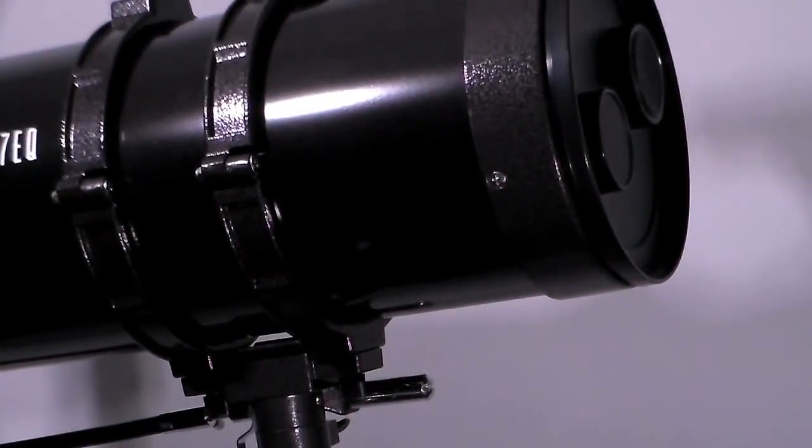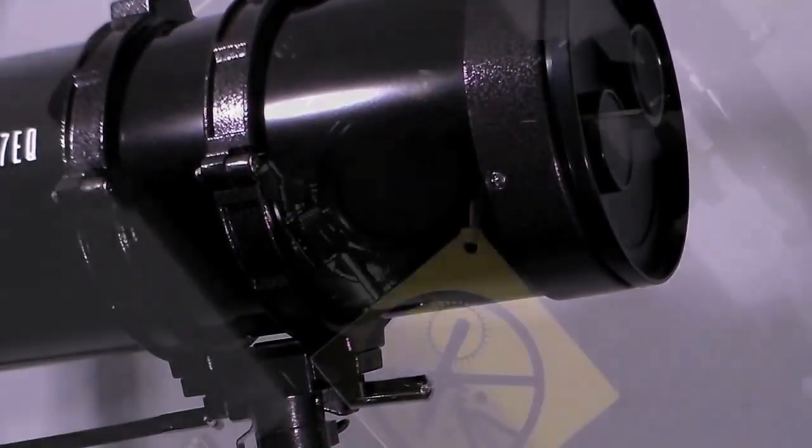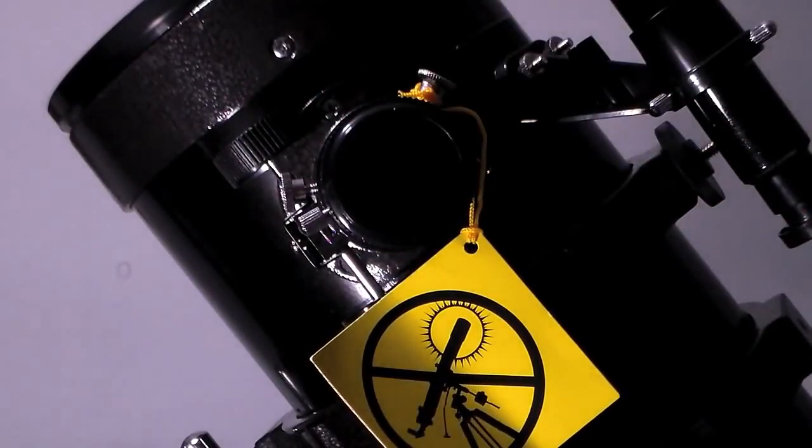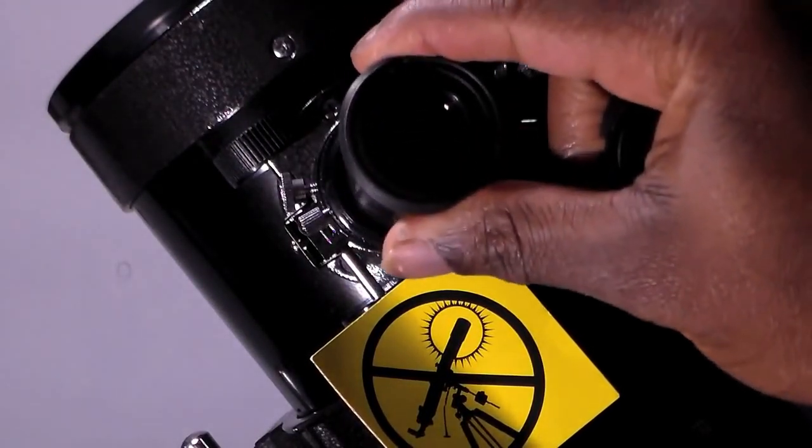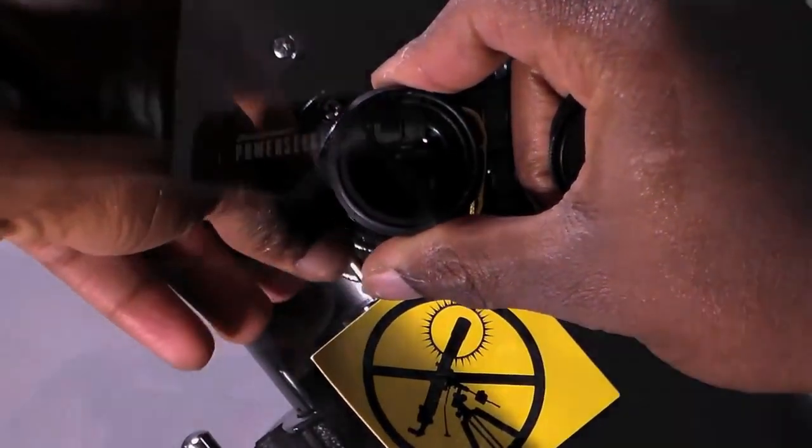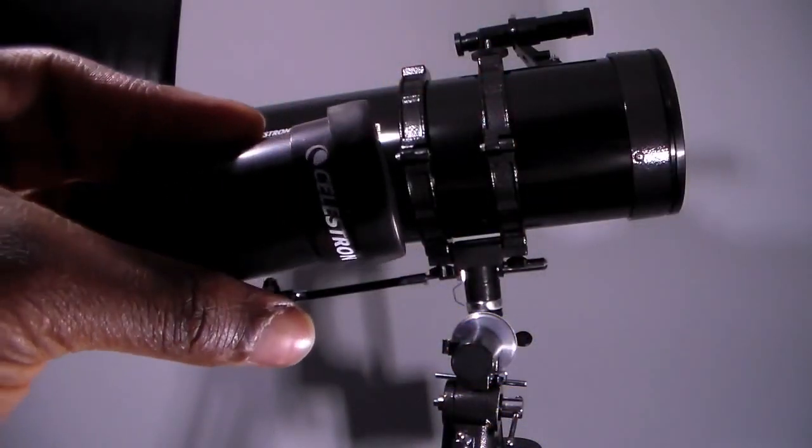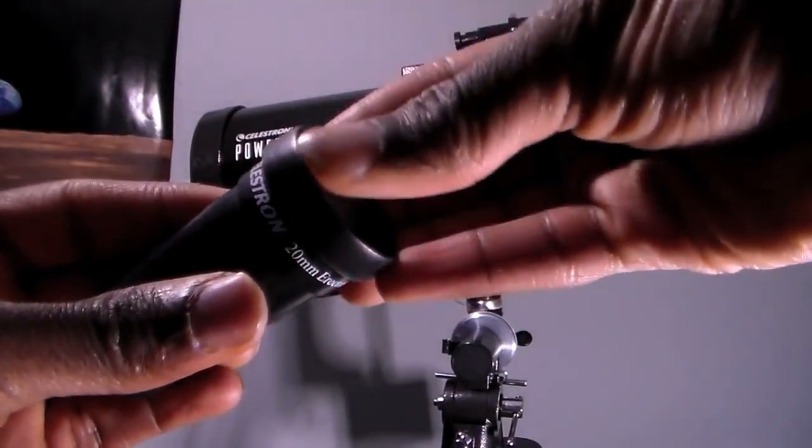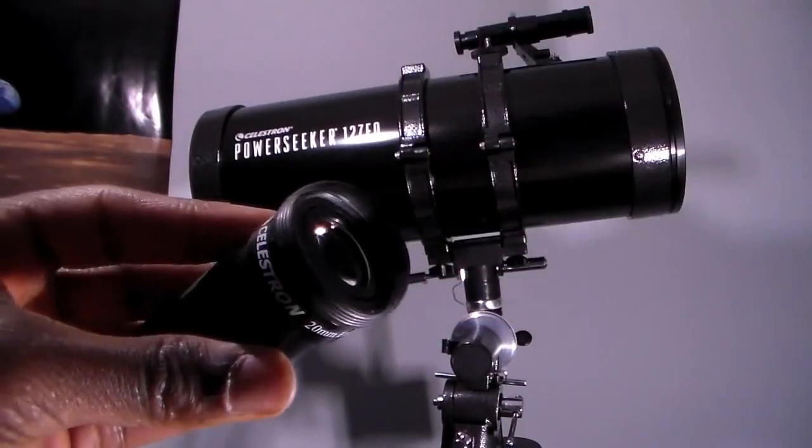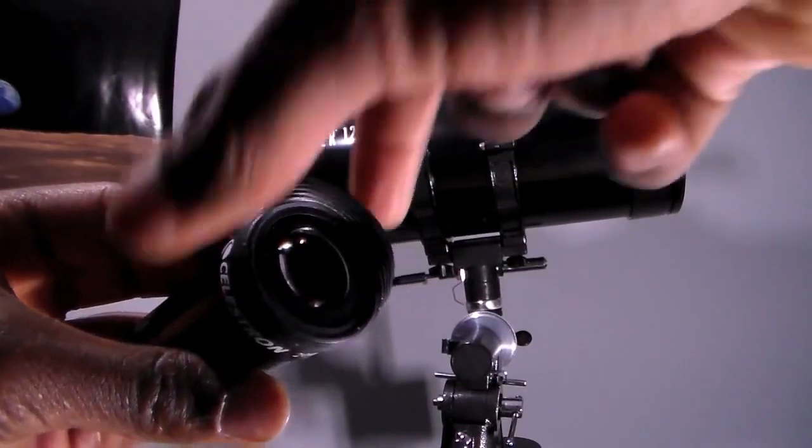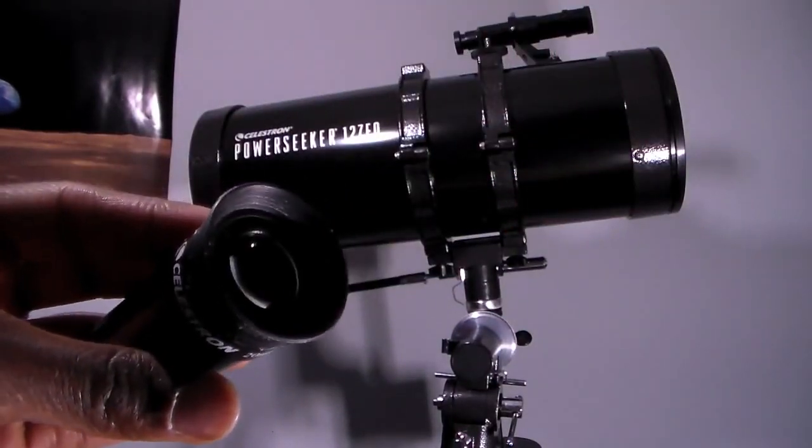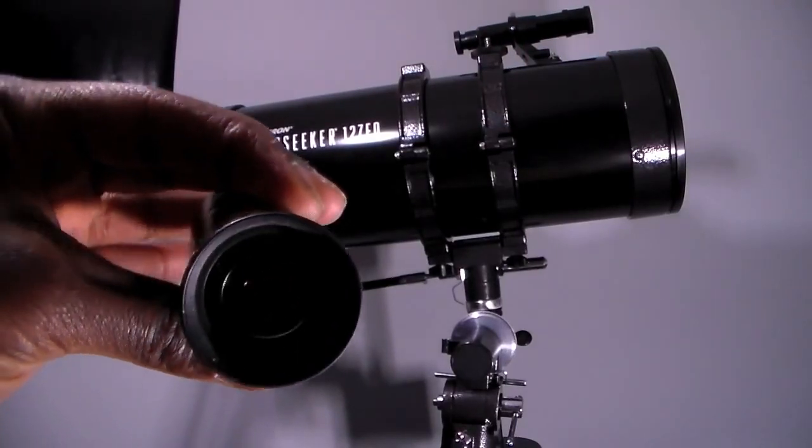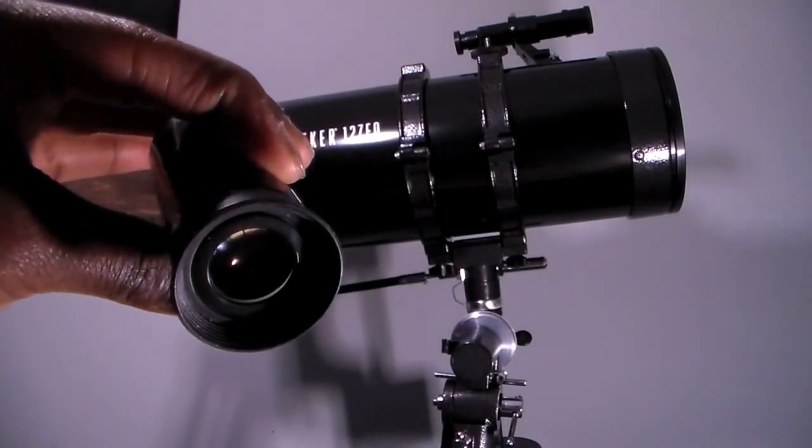Remove the protective cap to put in one of the two eyepiece adapters. The focal length of eyepiece 1 is 20 millimeters or 0.79 inches. The focal length of eyepiece 2 is 4 millimeters or 0.16 inches. Eyepiece 1 has a magnification of 50 and eyepiece 2 has a magnification of 250. The Barlow lens triples the magnifying power of each eyepiece.